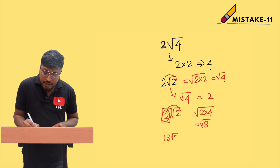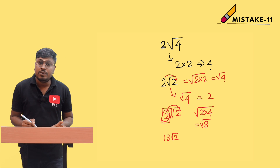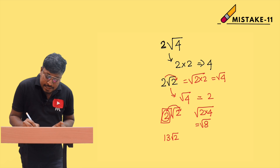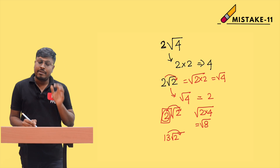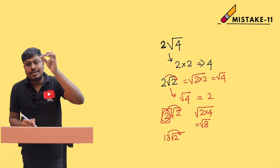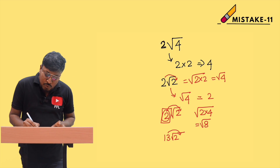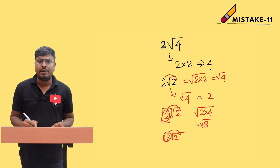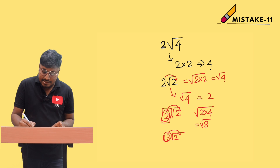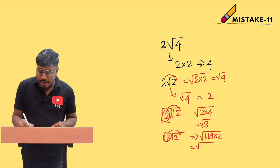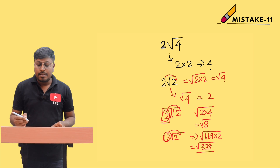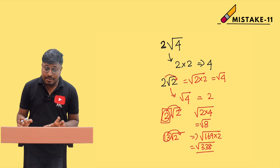For example, if it is 13√2 and you want to bring the 13 inside the square root, you should not write it as 13 times 2. You must square 13 first — 13 squared is 169 — then multiply: 169 times 2 gives √338. That is the correct way.